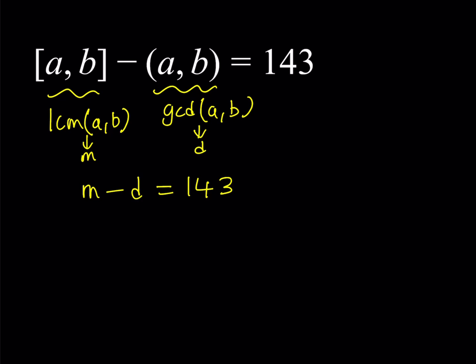LCM and GCD are two important concepts in number theory. When finding the least common multiple of two numbers, it will contain the maximum of the prime powers, and the GCD will contain the minimum of the powers. Therefore, the LCM is always going to be divisible by the GCD. In other words, we can safely say that D divides M.